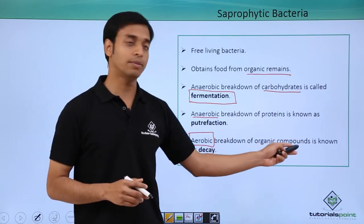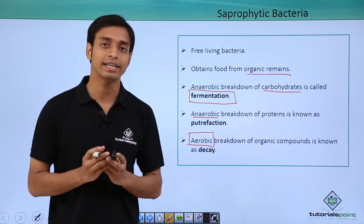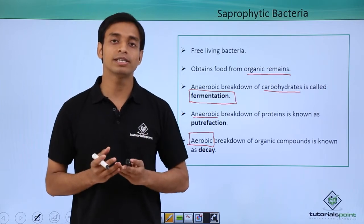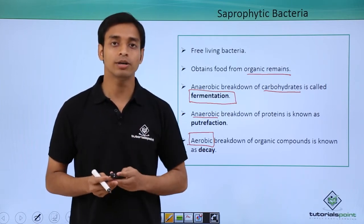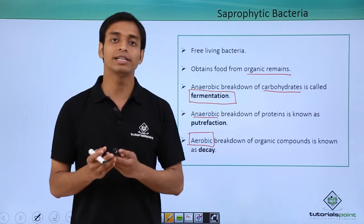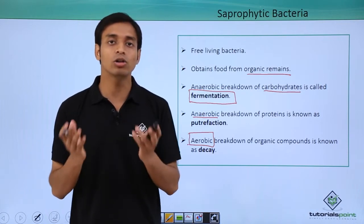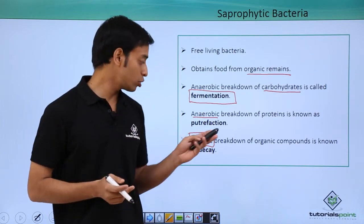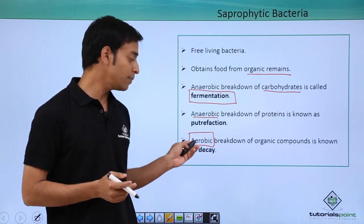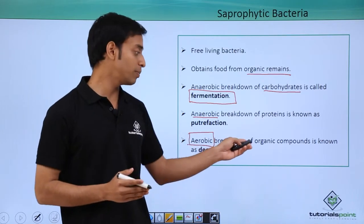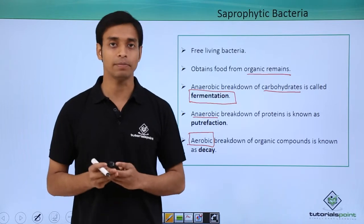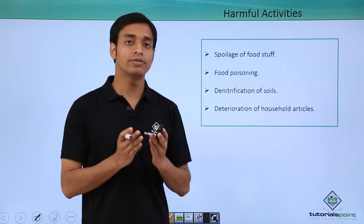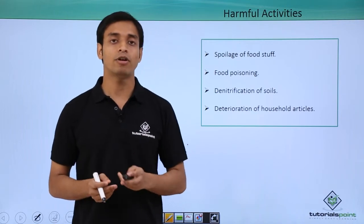There is another process which is an aerobic process. The aerobic breakdown of organic compounds is known as decay. This is the chemical reaction responsible for food materials in our home — like bread and rice — getting rotten. Decay is an aerobic process in which the breakdown of organic compounds takes place.